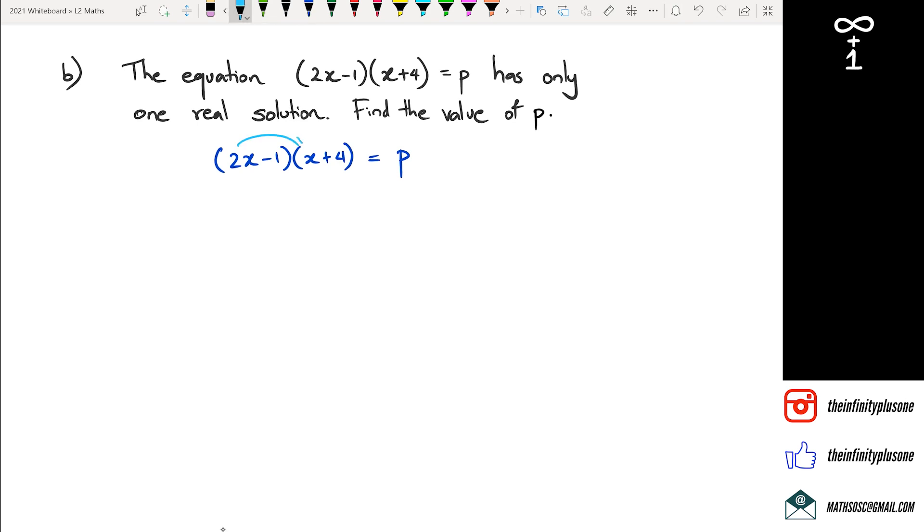That's the ax squared plus bx plus c. So here we need to expand the brackets. And first up, we've got 2x squared plus 8x. Then we've got negative 1x and 4, which gives us negative 1x plus 4, and all of that is equal to p. So then we've got 2x squared plus 7x plus 4 equals to p. Now remember, we need it to look like this,